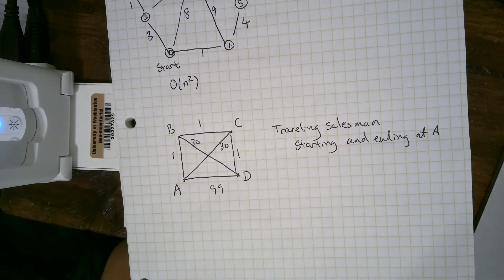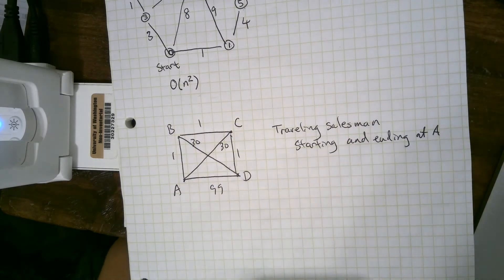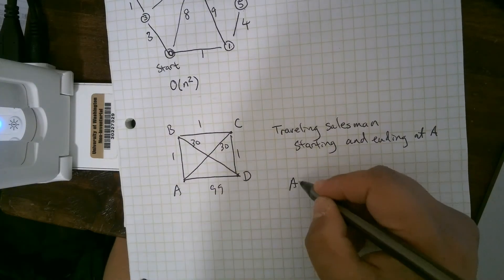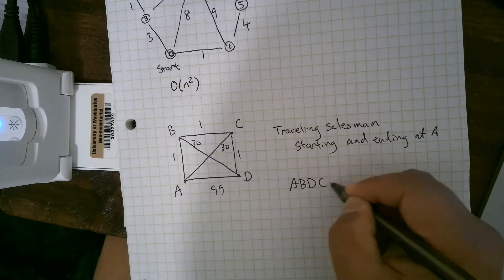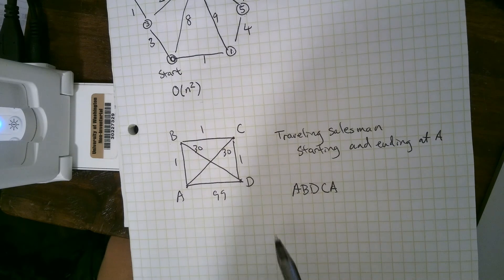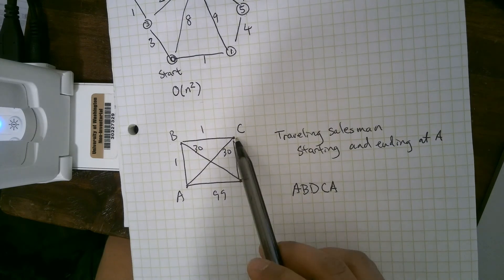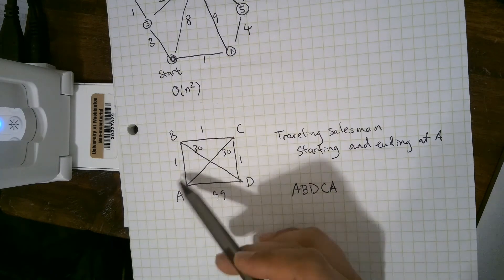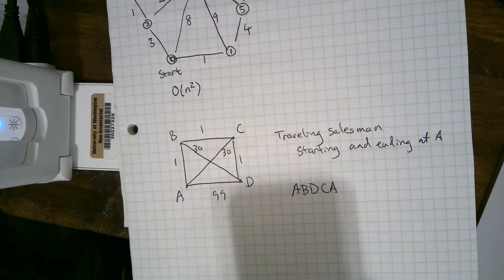The shortest traveling salesman path is that we go from A to B to D to C back to A. That's going to be shorter. We go 1 plus 30 plus 1 plus 30. That's a length of 62. It's better than this 102 is what we get going that way.